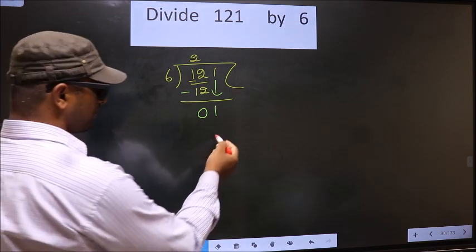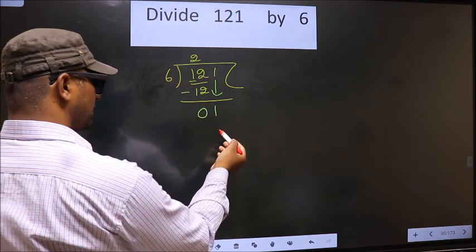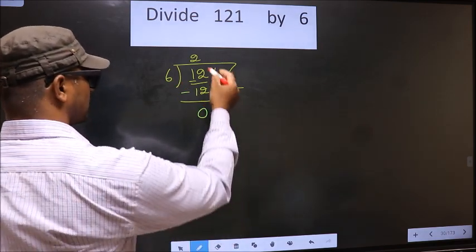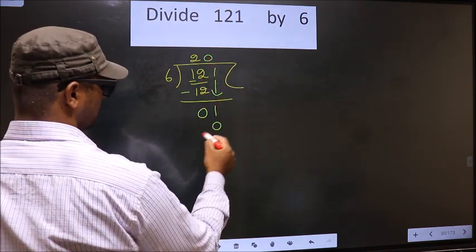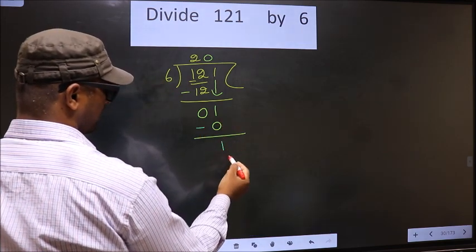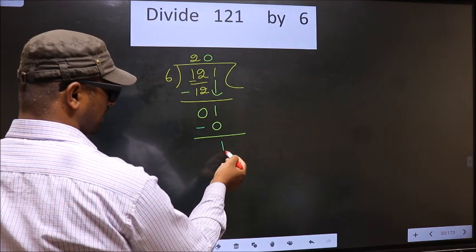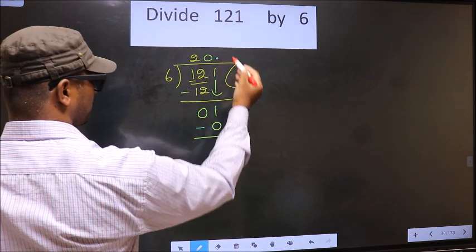what number should we write here? If we write 6 here, that is larger than 1, so what we do is we take 0 here. So 6 into 0 is 0. Now you subtract 1 minus 0, 1. Now here we did not bring any number down, and 1 is smaller than 6, so now you put a dot